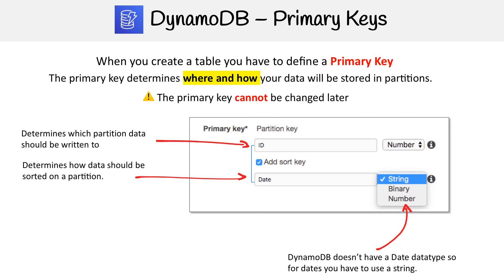You're going to notice that there are some data types here. I have a sort key that's a date, but notice that there isn't a date type in DynamoDB. In that case, you use a string. Just be aware that there is no date type.